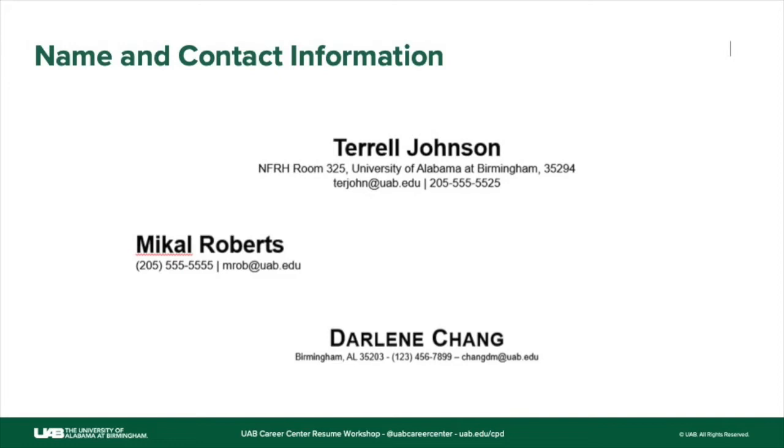Michael Roberts only has name, telephone number, and email address — which is completely fine — but his is justified to the left. And then Darlene Chang has city, state, telephone number, and email address. All three of these examples are correct. It doesn't matter whether it's justified to the center or the left — I've also seen contact information justified to the right, or the name justified to the left with the rest of the information to the right. All those formats are correct as long as you minimally have your name, telephone number, and email address.